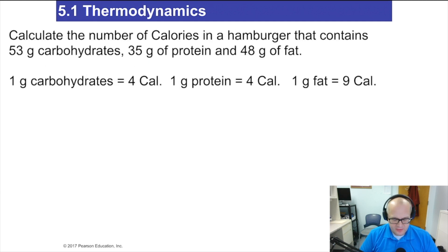Now let's work on this problem together. Let's calculate the number of calories in a hamburger that contains 53 grams of carbs, 35 grams of protein, and 48 grams of fat. This is a very simple question. Let's just use dimensional analysis to determine how many calories from each calorie source there are, and then add them up to get the total calories in the hamburger.